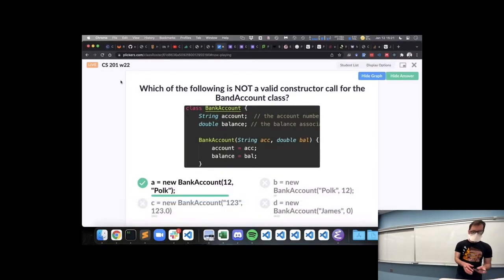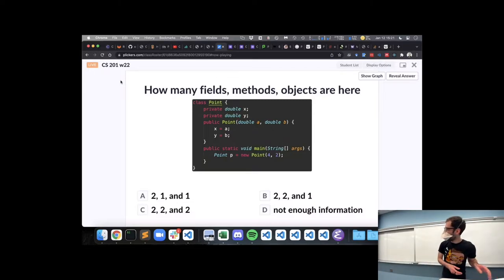Okay. One other exercise here. Here I have some code. Is that too small? Oh yeah, good idea. Okay. So here I have some code, and I'm asking in this code for you to count how many fields are there, how many methods are there, how many objects are there. And that's what these numbers in these different answers are: number of fields, number of methods, number of objects in that order. So take a moment, try and count up how many of each of those there are involved in this code.